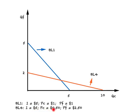BL4 is based on income of $5, price of clothing at 50 cents, and price of food at $2.50. The blue Budget Line 1 has income of $5 with both prices at $1. To compare real income implied by BL4 versus BL1, you calculate the area of the triangle under each line. The area under BL1 is greater than the area under BL4, so BL1 implies higher real income relative to BL4.